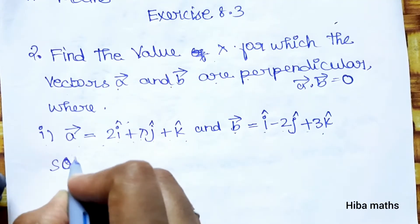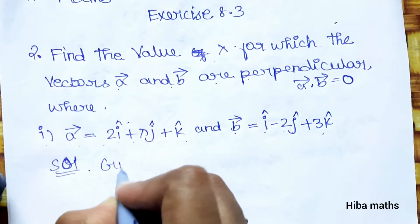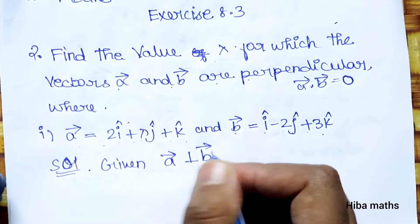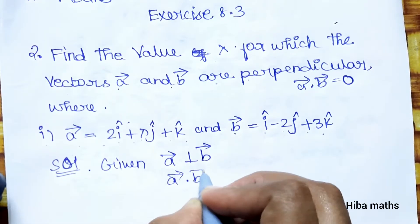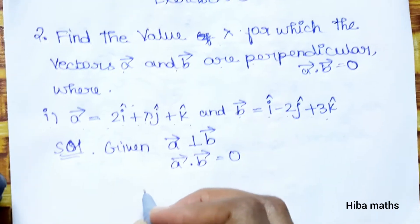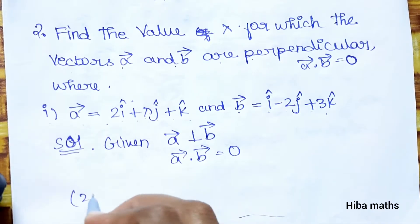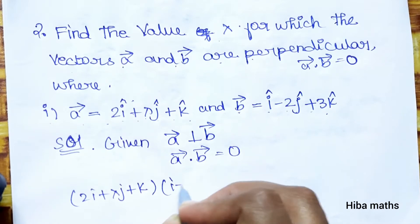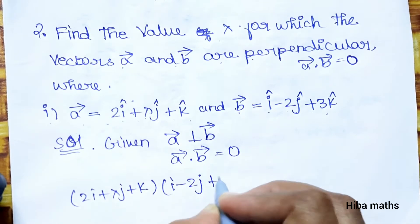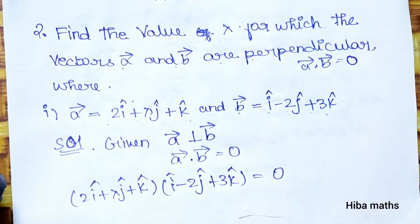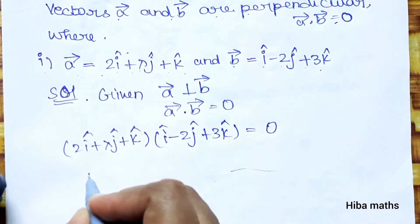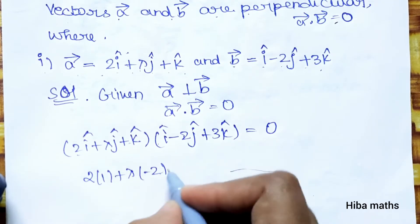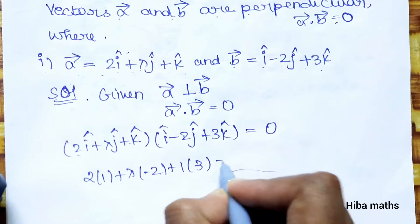Let's find the solution. Given vector a is perpendicular to vector b, so a dot b is equal to 0. Now, (2i + λj + k) · (i − 2j + 3k) = 0. Multiplying: 2 × 1 plus λ × (−2) plus 1 × 3 equals 0.